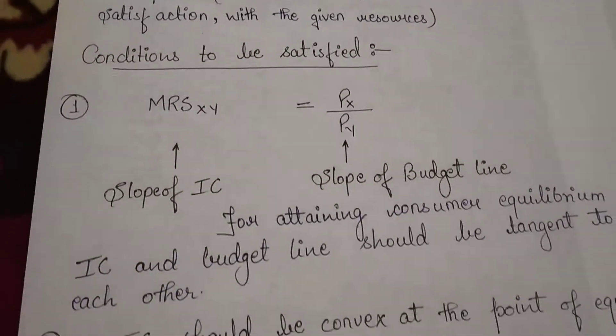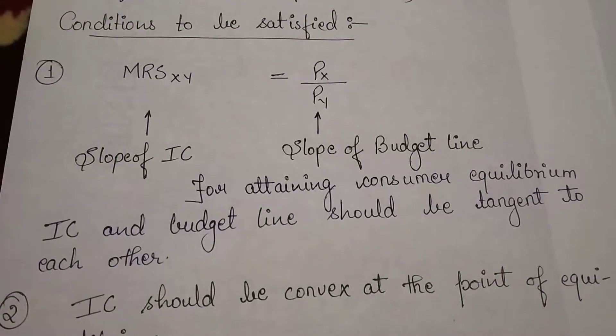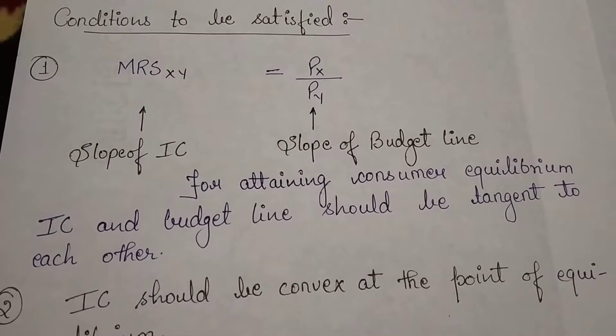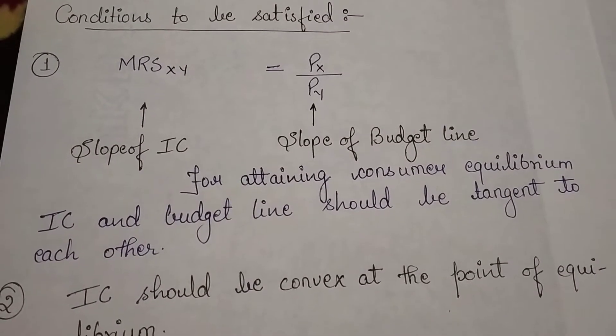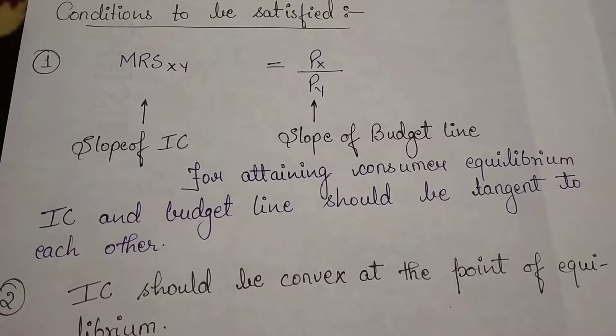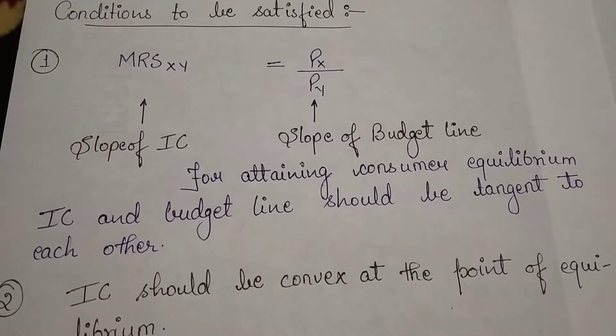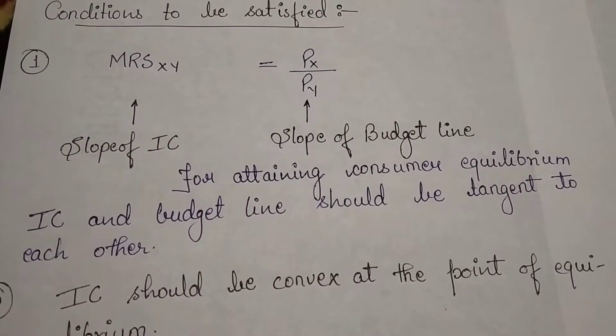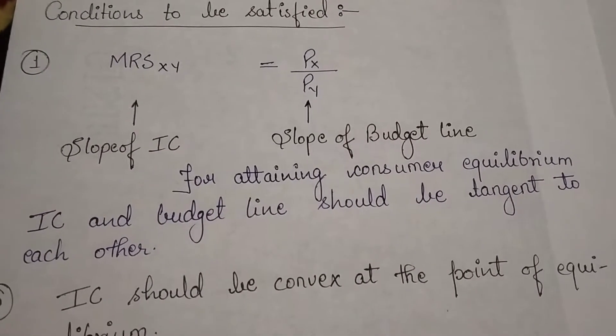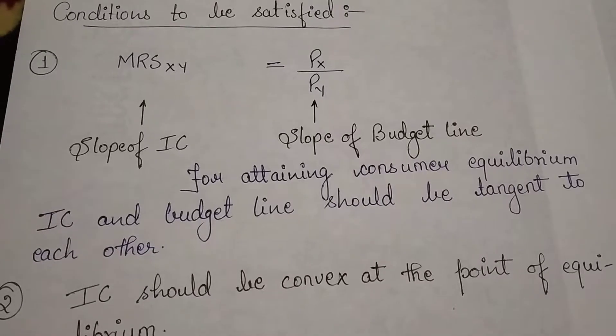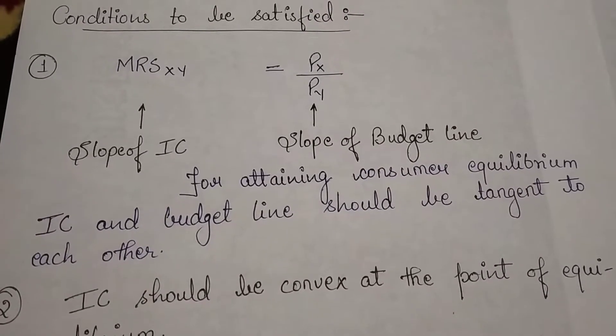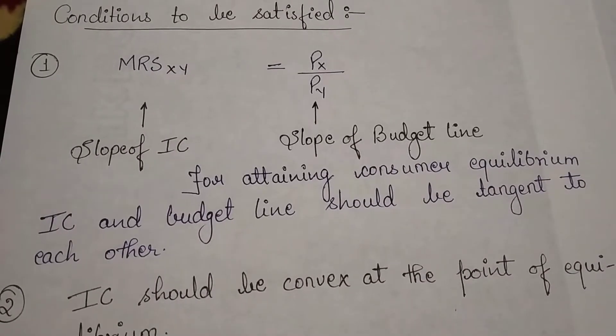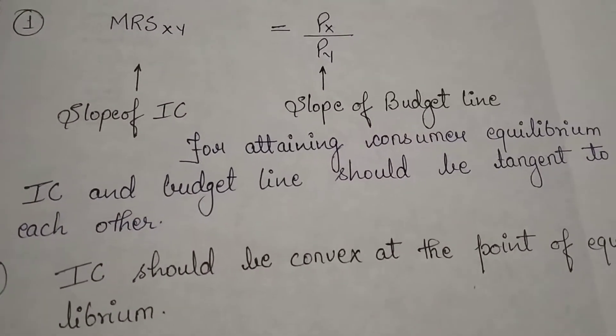Now we will talk about how to attain consumer equilibrium through IC approach. There are two conditions to be compulsorily satisfied. The first one is MRS_xy, that is marginal rate of substitution which indicates slope of IC, is equal to P_x upon P_y, that is slope of budget line.